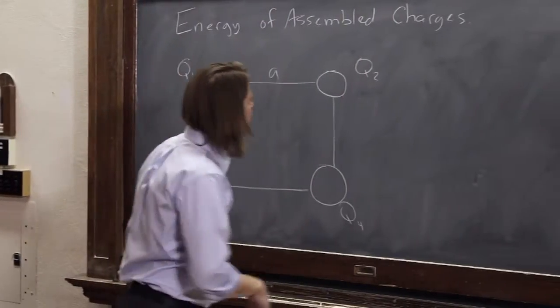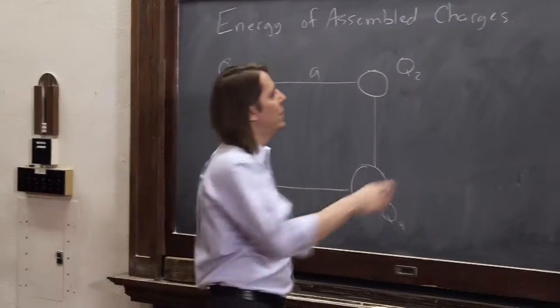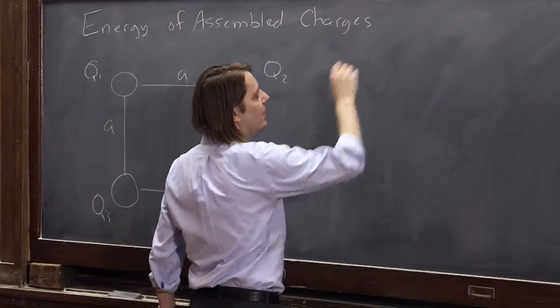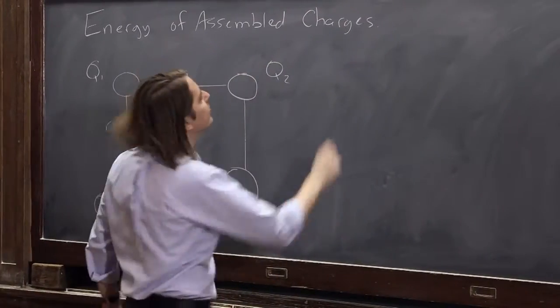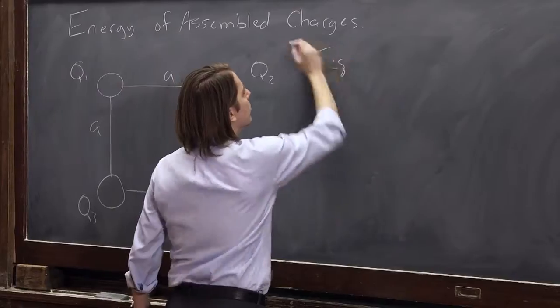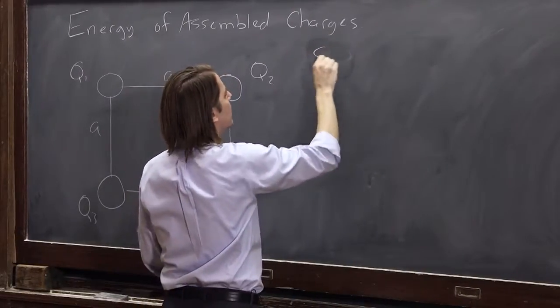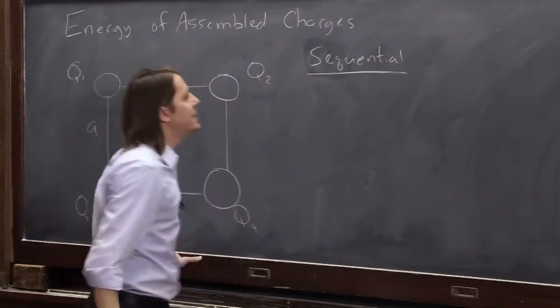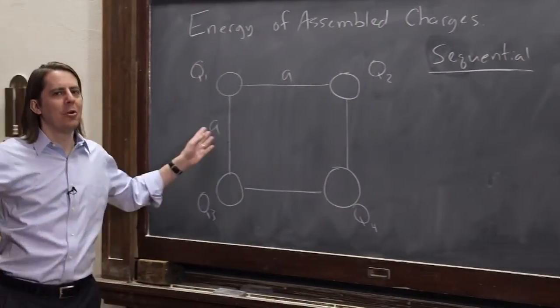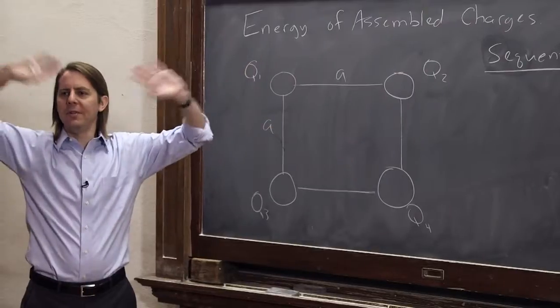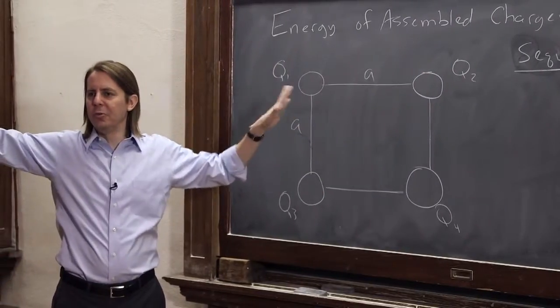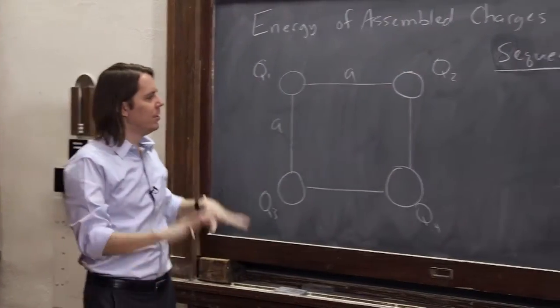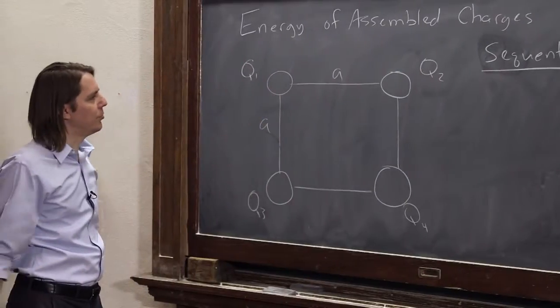Let's see. So there's sort of two ways to do it. One way is the sequential way. I'll call it sequential. And the idea is, when these charges were really far apart, they weren't interacting. They were all at infinity from each other. There was no potential anywhere. Potential was sort of zero in this place because the charges are so far apart.